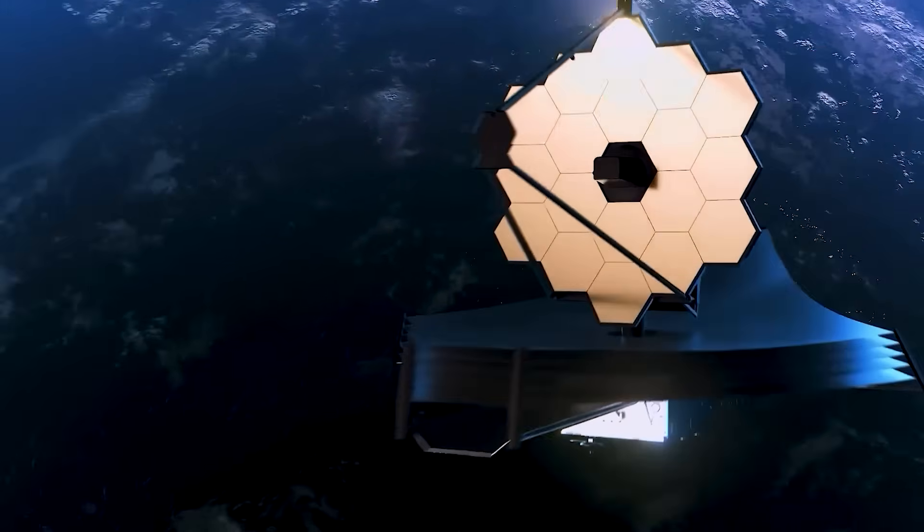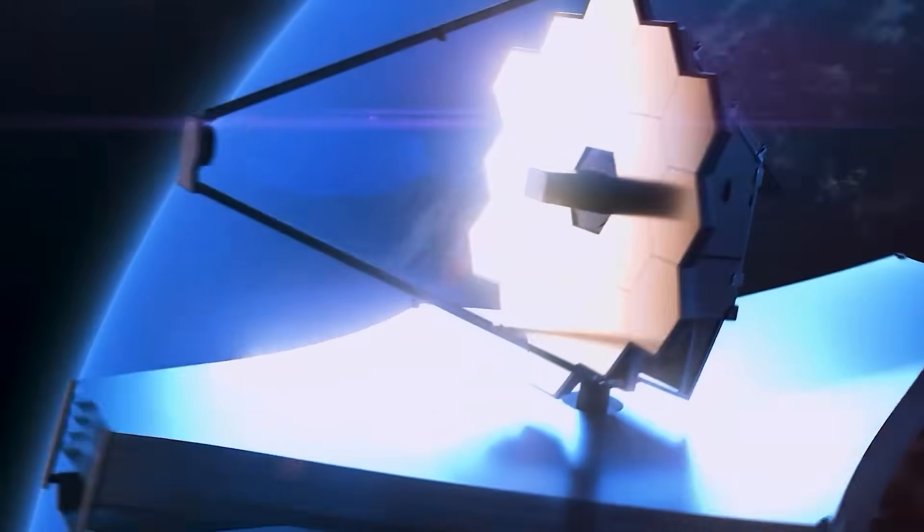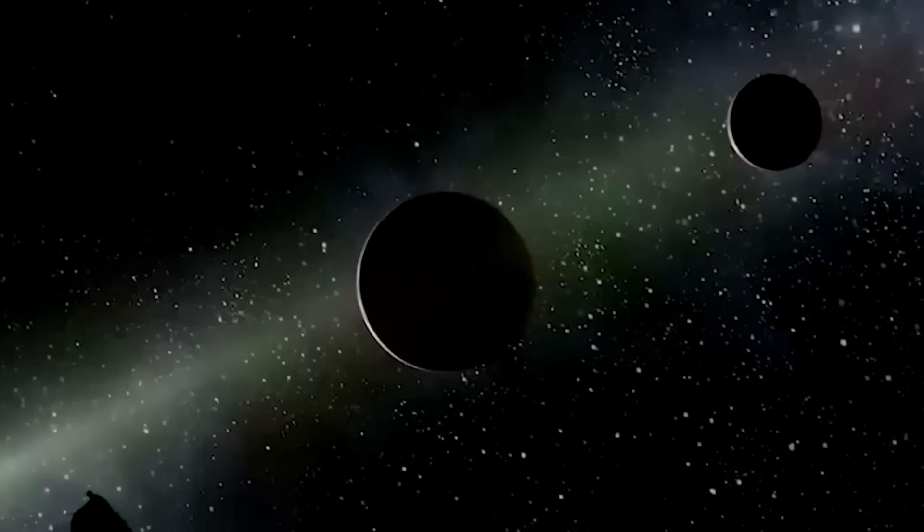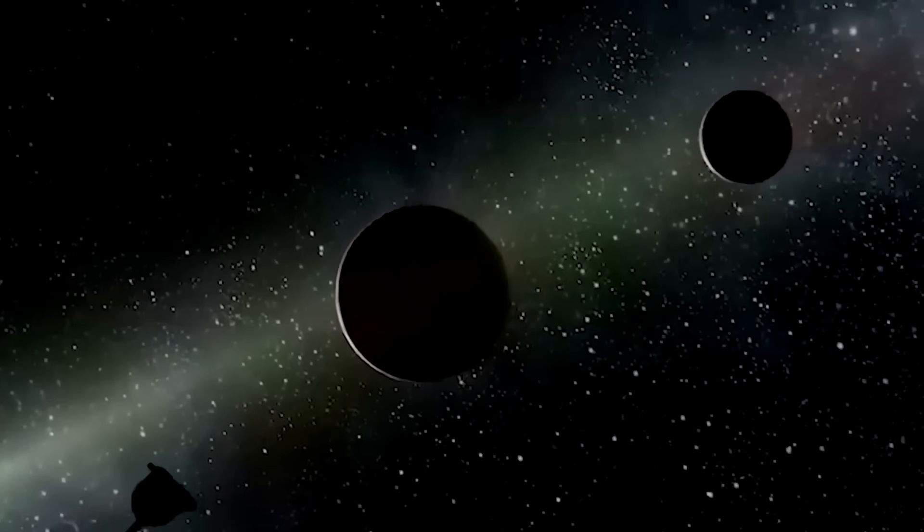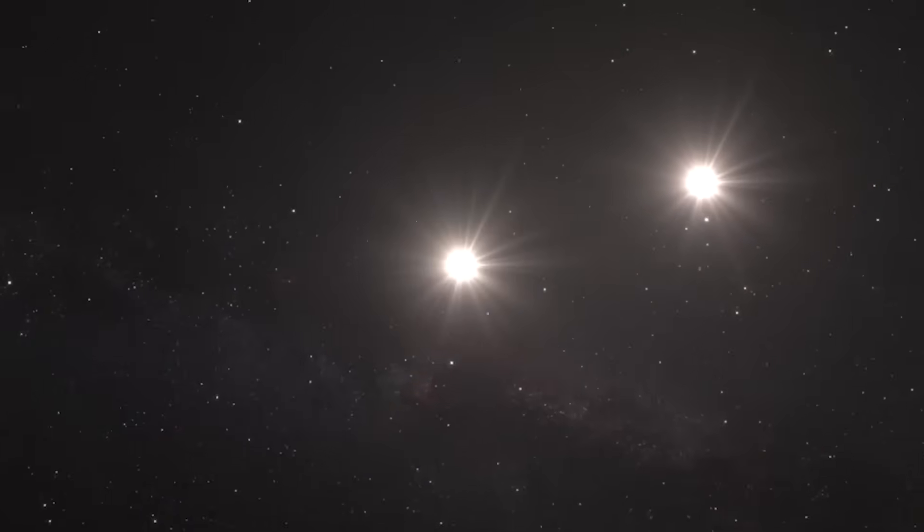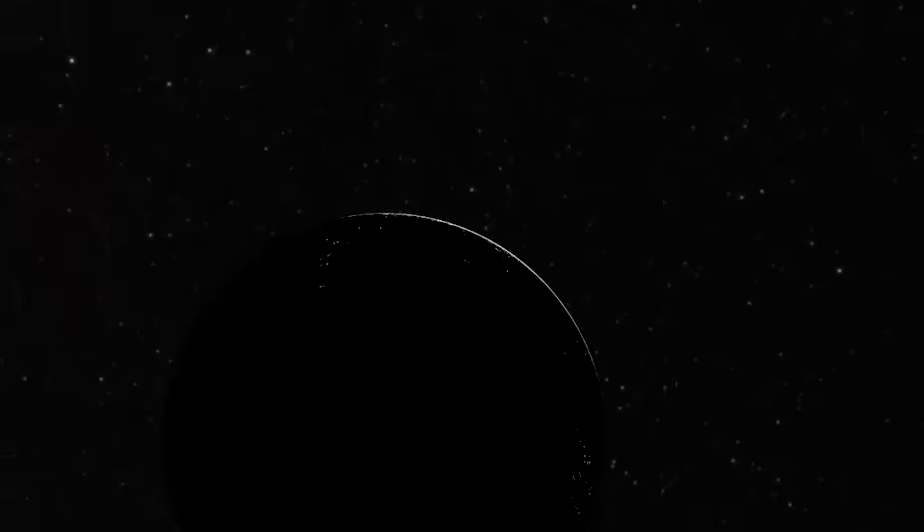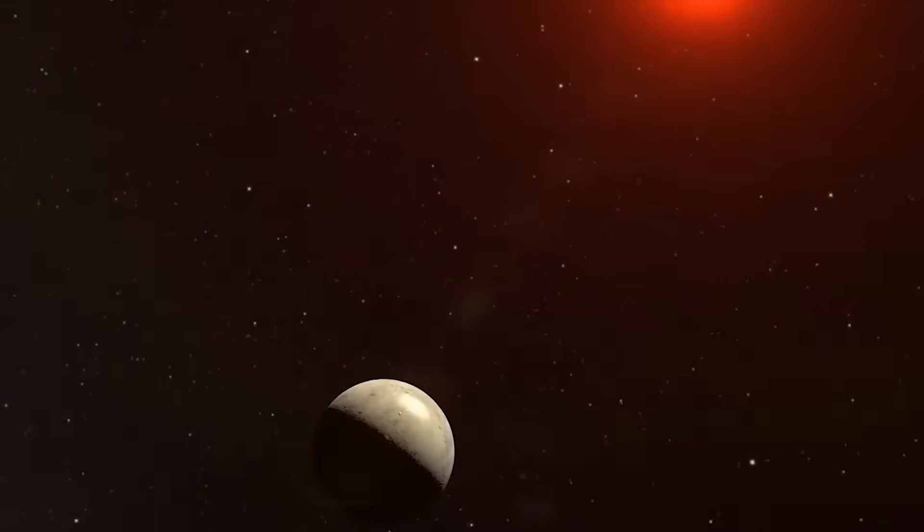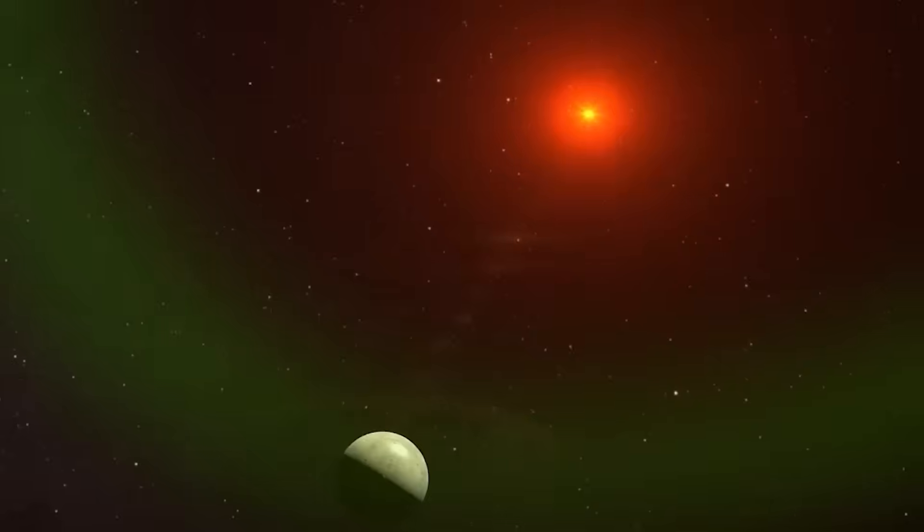It's not just the distance that makes it interesting. It's what it tells us about the planet's origins. Before Webb imaged it, astronomers had spotted gaps in the star's dusty disk, areas that hinted a planet might be carving its path. But those were just hints. Now, we've got the planet itself, confirming speculation.